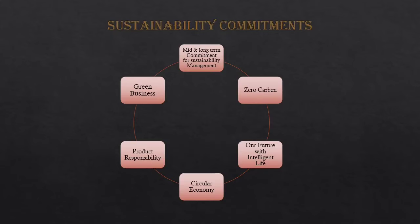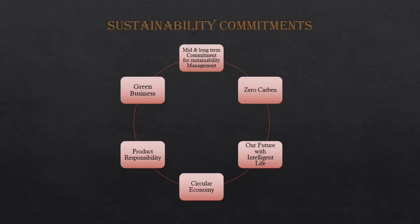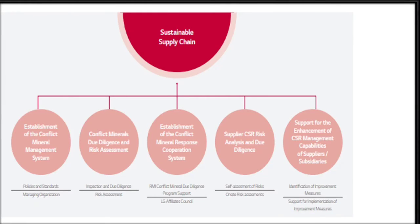Regarding product responsibility across the raw material, manufacturing, distribution, use, and disposal or recycling lifecycle, LG Electronics pursues a green product strategy from a mid-to-long-term perspective that considers three major elements: eco-friendliness, resources, energy, and humans. The aim is to reduce environmental impact across the entire product lifecycle. There is also growing demand for non-financial corporate responsibility and mutual growth with society.